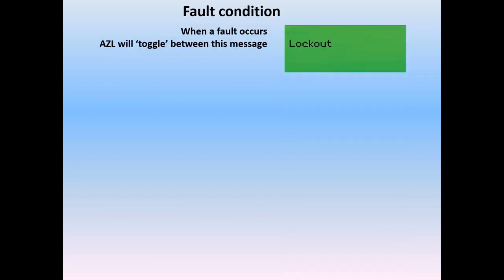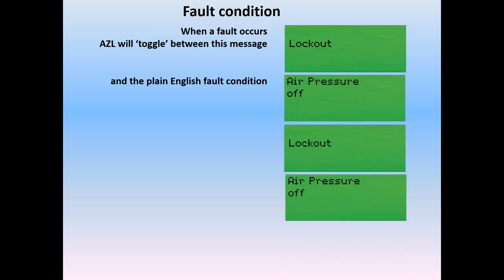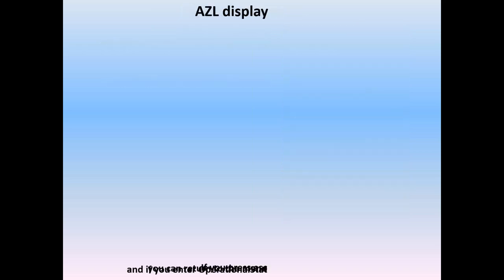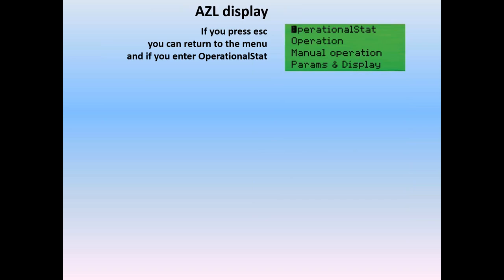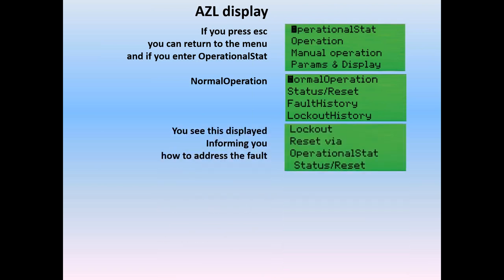When the LNV goes into a fault, the AZL screen will display a lockout and it will toggle between the lockout and a plain English fault condition — such as 'air pressure off' — back and forth, telling you what the fault condition is. On the AZL display, if you press escape, you can go back to operational status. When you go to try and enter normal operation, it says you can't because you have a lockout and you must reset via the operational status reset screen, specifically telling us how to go about resolving the fault and resetting it.